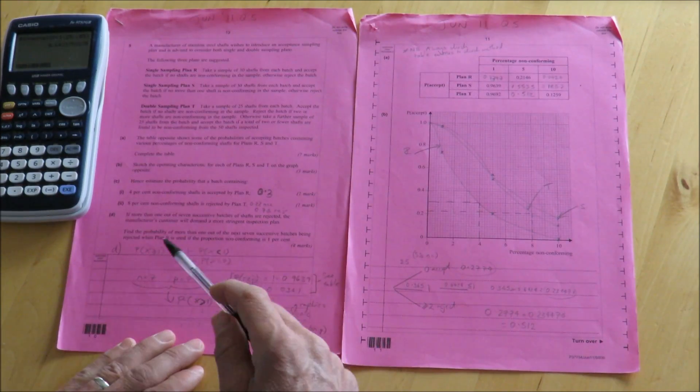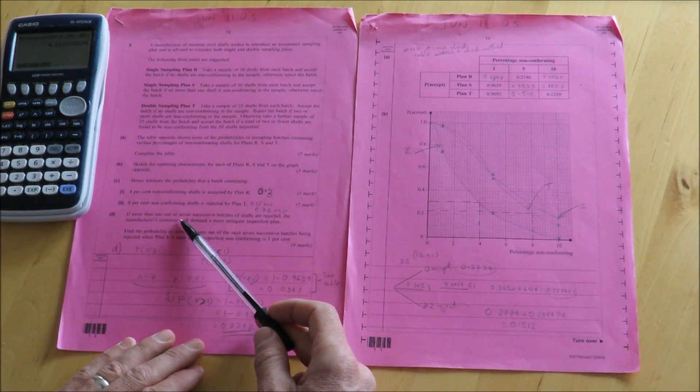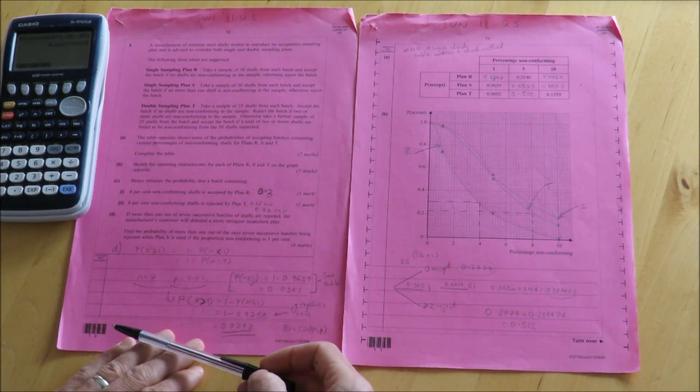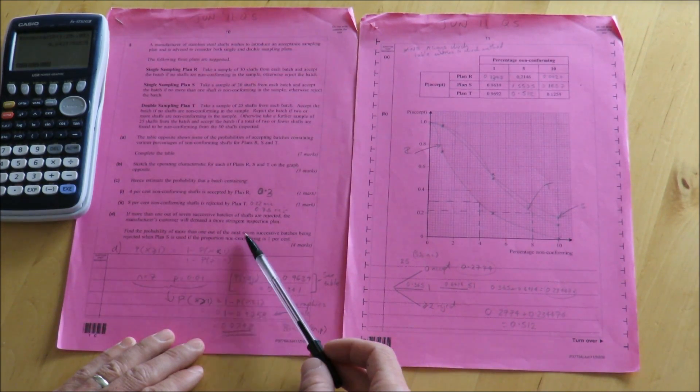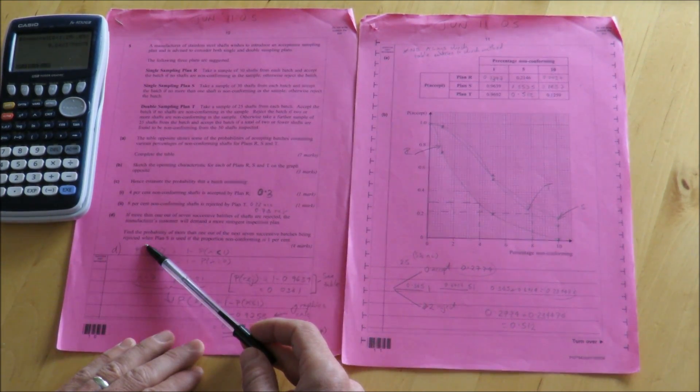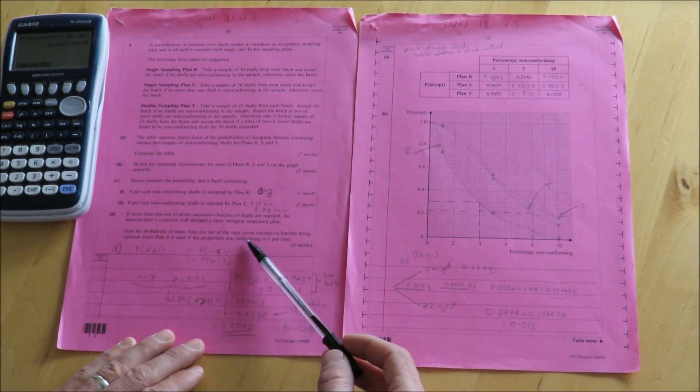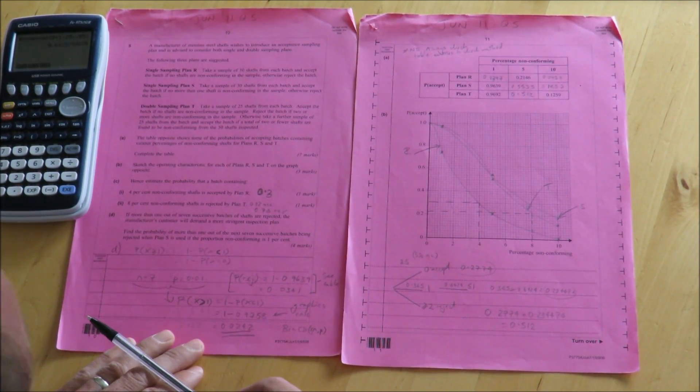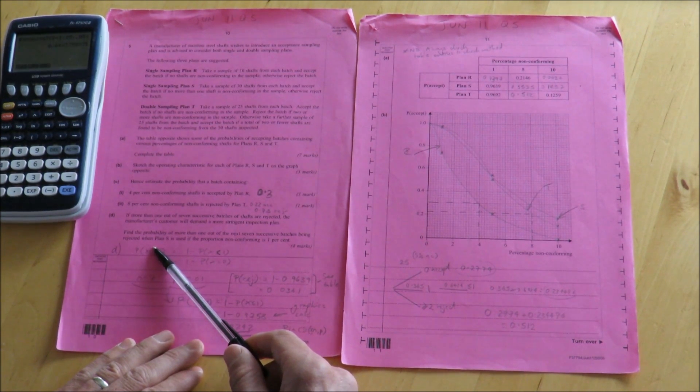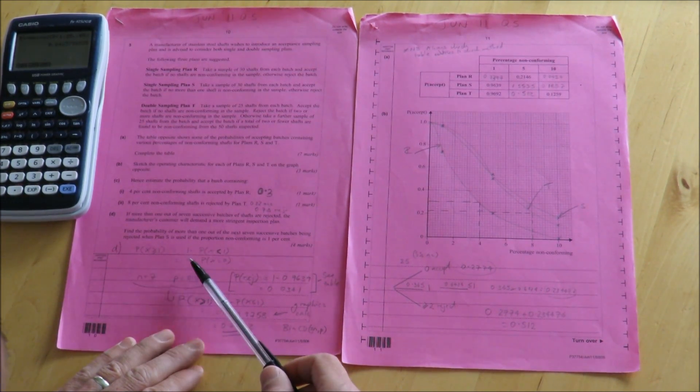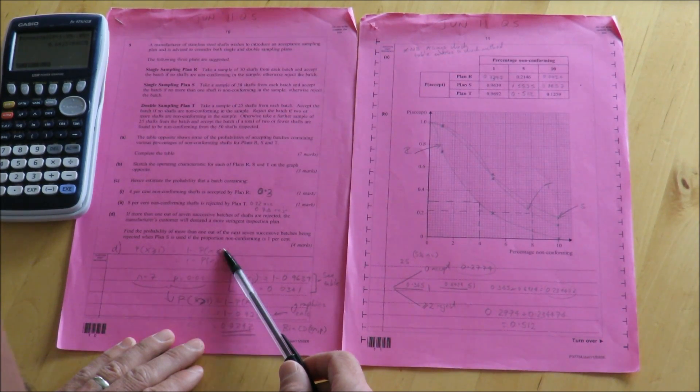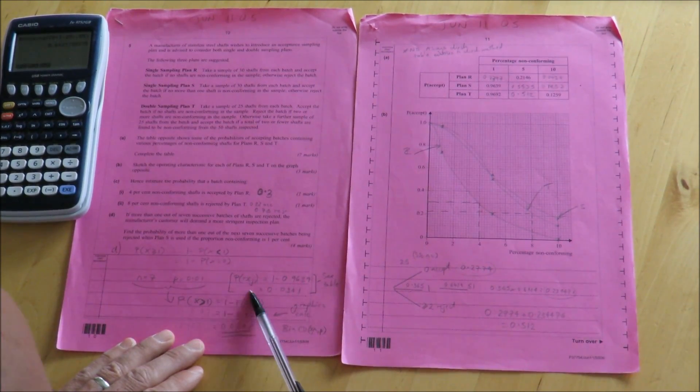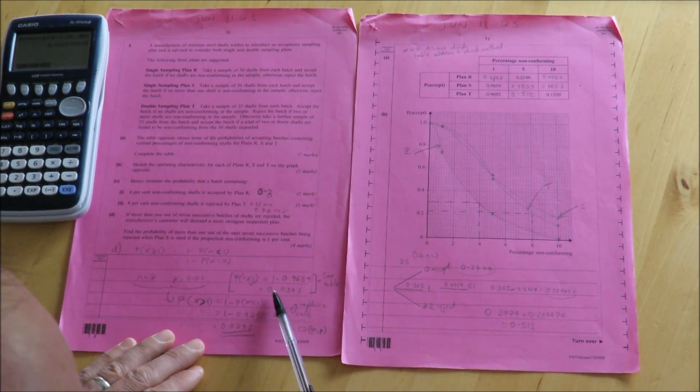The final part of this question takes a slightly different tact. It says here, if more than one out of seven successive batches of shafts are rejected, the manufacturer's customer would demand a more stringent inspection plan. Find the probability of more than one out of the next seven successive batches being rejected when Plan S is used if the proportion non-conforming is 1%. So the first thing that I've done here is I've worked out the probability of rejecting with Plan S. So the probability that x is greater than or equal to 1 is equal to 1 minus the probability that x is less than 1. I.e. 1 minus the probability that x is equal to 0.